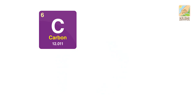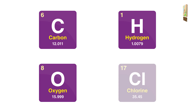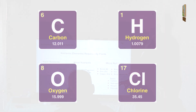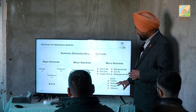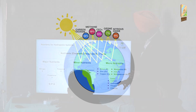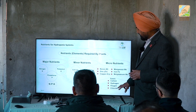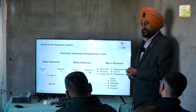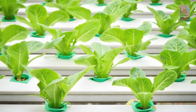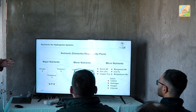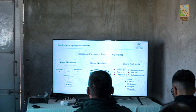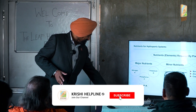The gases are carbon, hydrogen, oxygen, and chlorine. Hydrogen is taken in the form of water — not alone; hydrogen and oxygen in the form of water. Then carbon dioxide for photosynthesis and all that. These are the nutrients. This is how you balance nutrients in hydroponics. Let us go further.